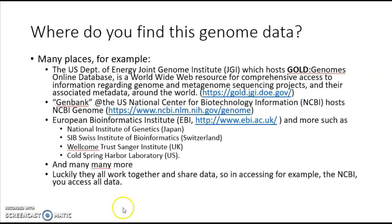So where do you find all this stuff? There are many answers to that. The U.S. Department of Energy hosts the Joint Genome Institute, or JGI, which in turn hosts a resource called GOLD — the Genomes Online Database. That's a worldwide web resource giving comprehensive access to information about genomes and also metagenomes, which are all the DNA from a complex environmental sample. There are associated metadata — things like who the human was, their health conditions, age, when sampled, how it was sequenced, and so on.